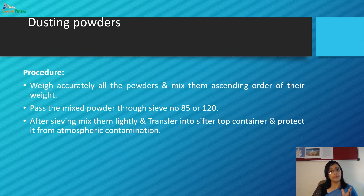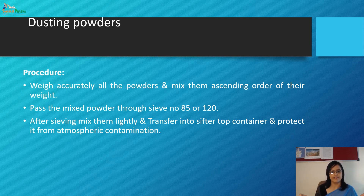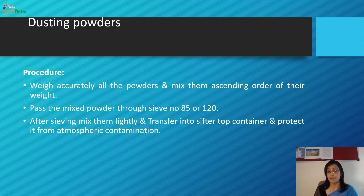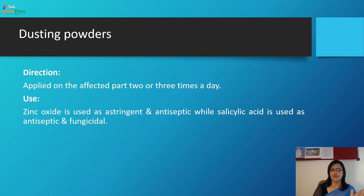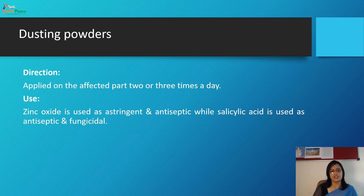The procedure for dusting powder: weigh accurately all the powders and mix them in ascending order of their weight. Pass the mixed powder through sieve number 85 to 120. After sieving, mix them lightly and transfer into the sifter top container, protecting it from atmospheric contamination. Apply on the affected part two to three times a day as prescribed. Zinc oxide is used as an astringent and antiseptic, while salicylic acid is used as an antiseptic and fungicide.